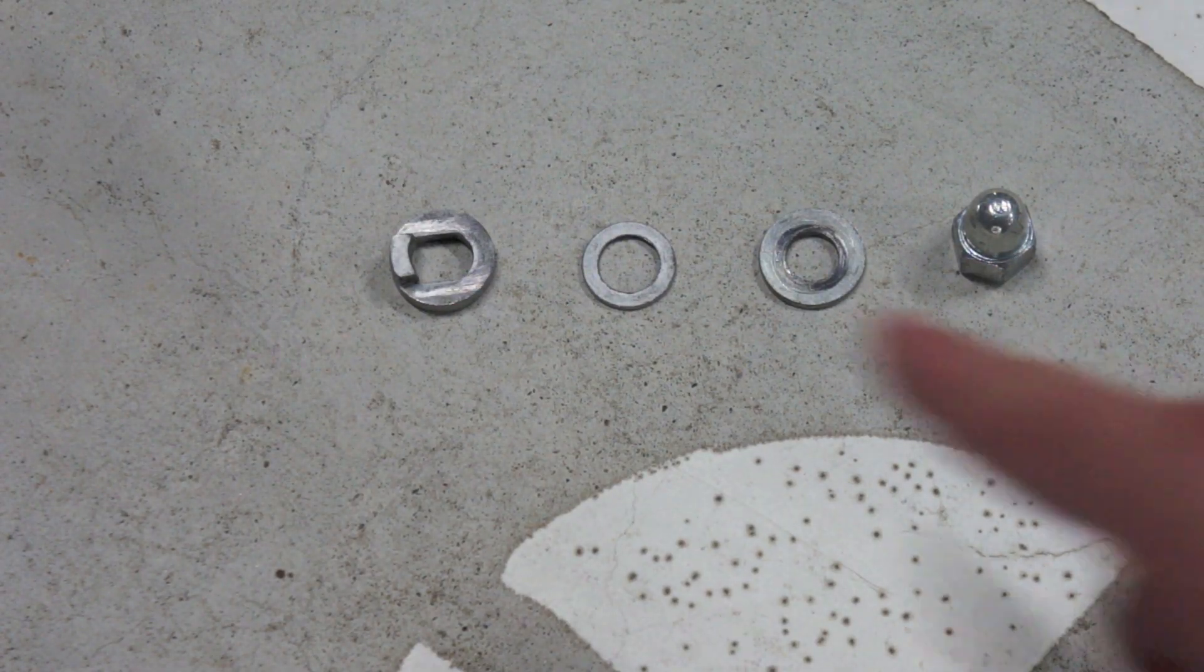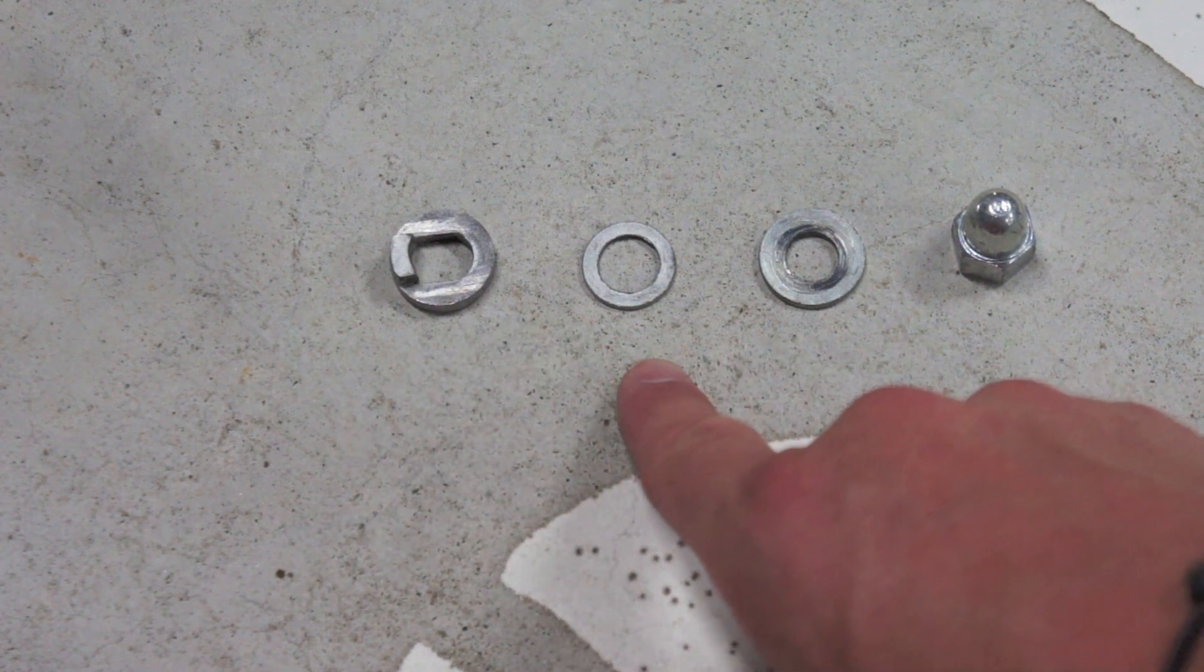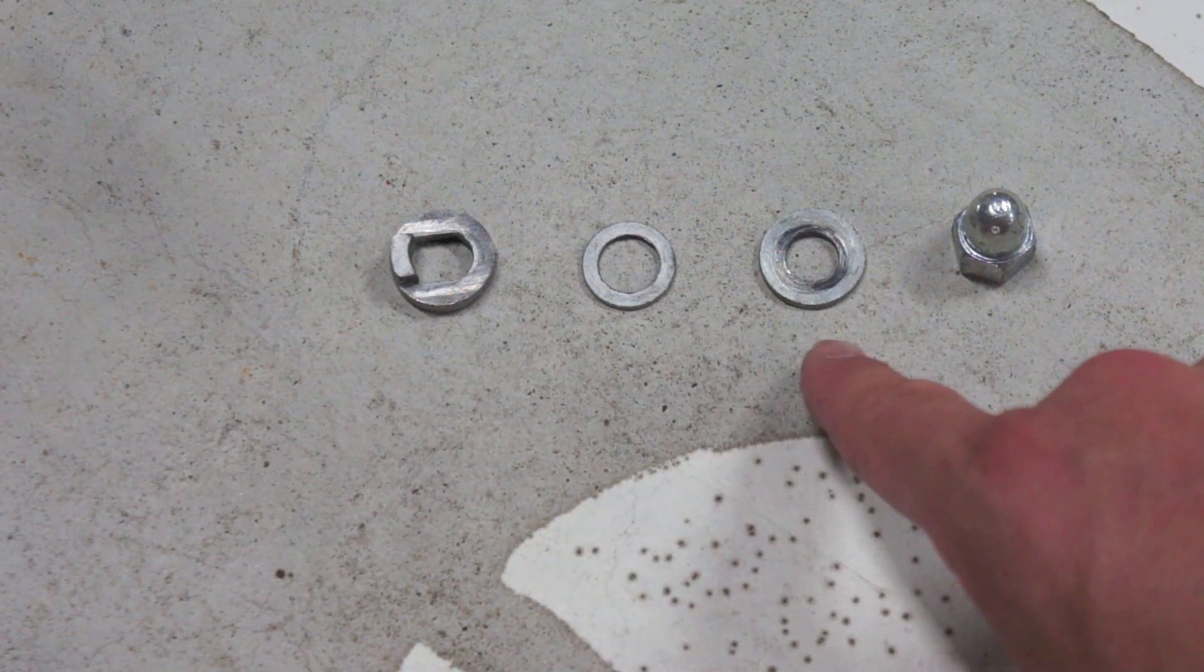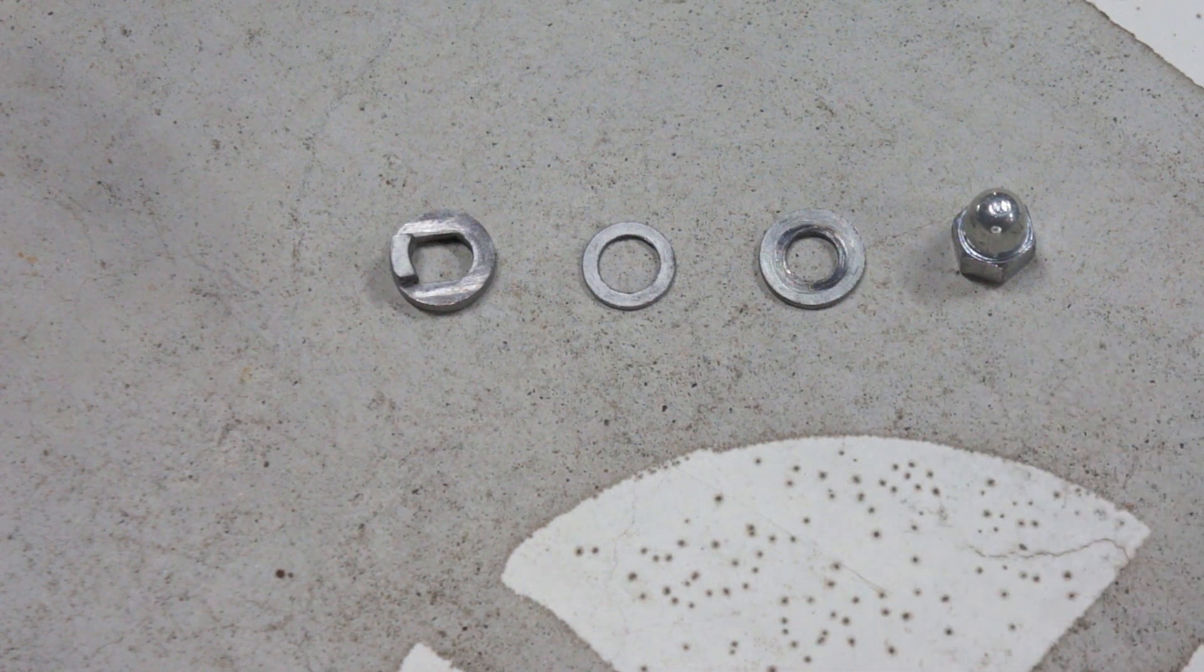To install Clean Republic's hub motor you will need to use the three washers that come with it: a tab washer, a smaller washer, a larger washer, and the nut that holds the wheel onto the front forks.